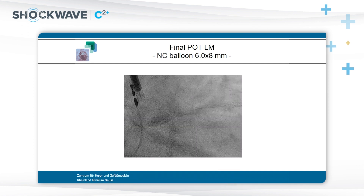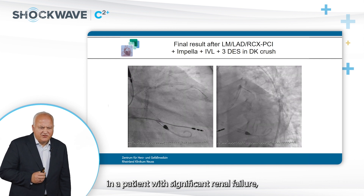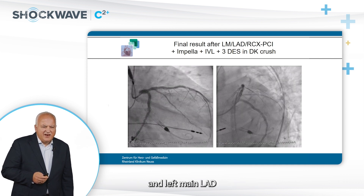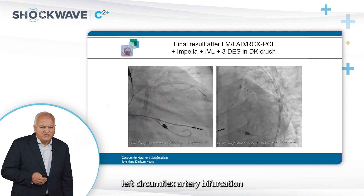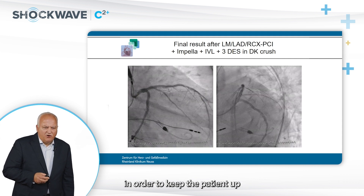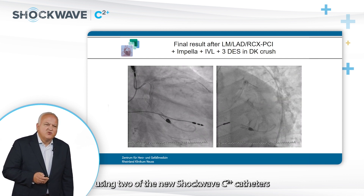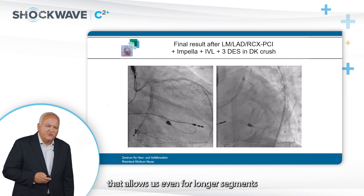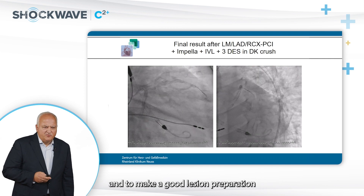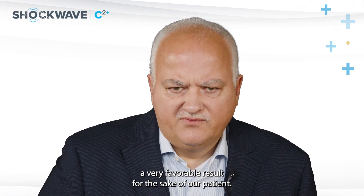The final maneuver, as always in DK-Crush, is a final POT maneuver in the left main with a 6.0 mm balloon. This is the final result achieved in this quite complex case — a patient with significant renal failure, impaired left ventricular function, and heavily calcified left main, LAD, and circumflex artery bifurcation stenosis. We performed a DK-Crush procedure with Impella support and very effective lesion preparation using two new C2-plus catheters, achieving a very favorable result for the patient.